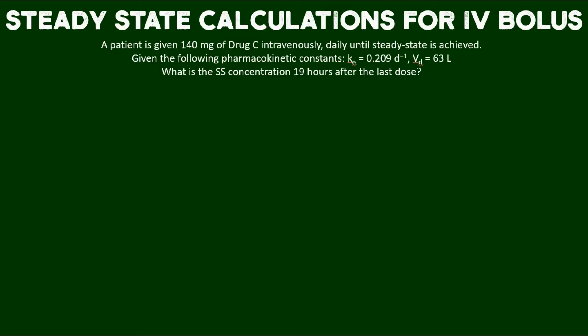Here's the scenario. A patient is given 140 milligrams of drug C intravenously daily until steady state is achieved. Given the following pharmacokinetic constants: k_e = 0.209 days^-1 and V_d = 63 liters, what is the steady state concentration 19 hours after the last dose?